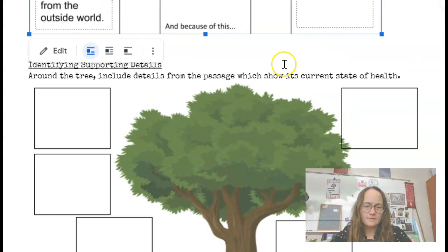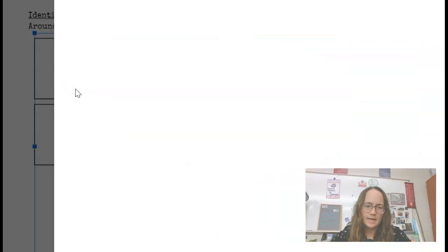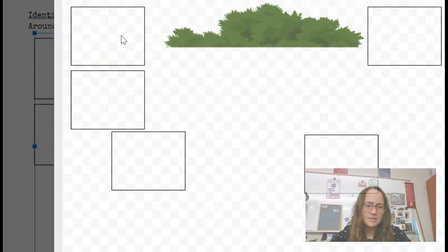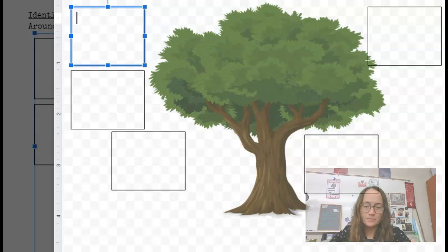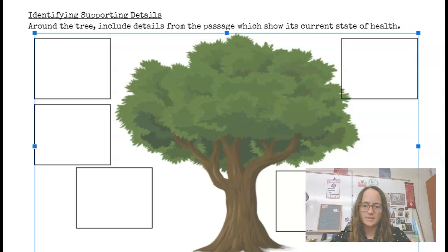In this next activity, this one's pretty easy. You're just going to identify details that prove the state and the health of this tree. So again, if you double click on here, you can edit the box. So if you want to go and just copy and paste some details or write the details proving the health of the tree, you can go ahead and do so in those boxes.